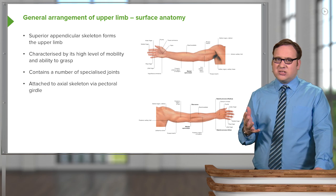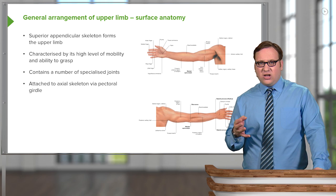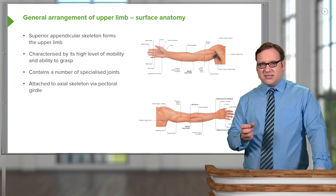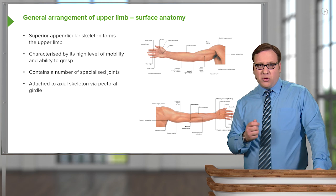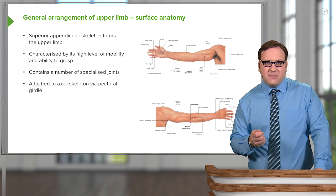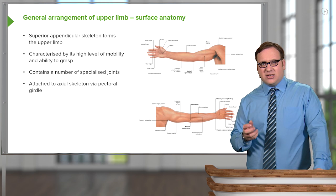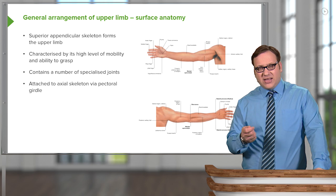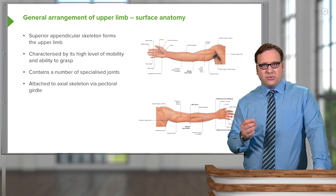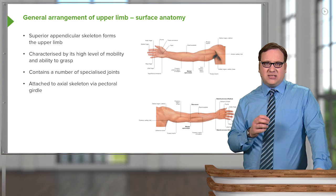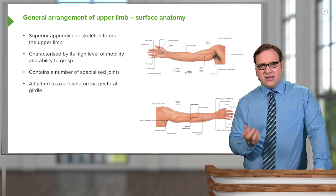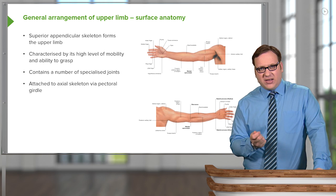It's a key difference from the lower limb. The lower limb doesn't have as much mobility as the upper limb, and also it doesn't have as much function of the feet compared to the hand. So it's a lot easier to pick up structures with your hands than it is with your feet.